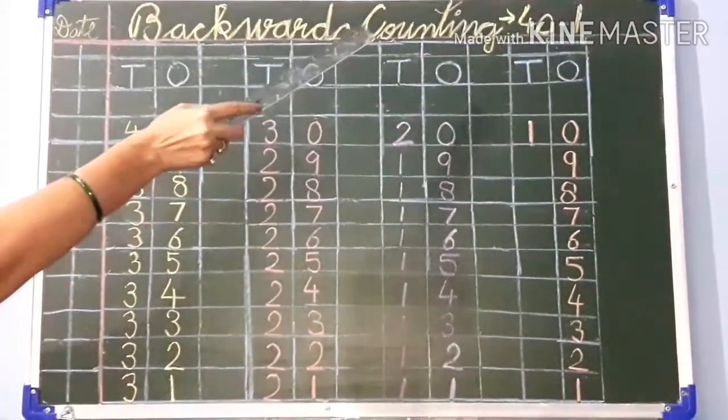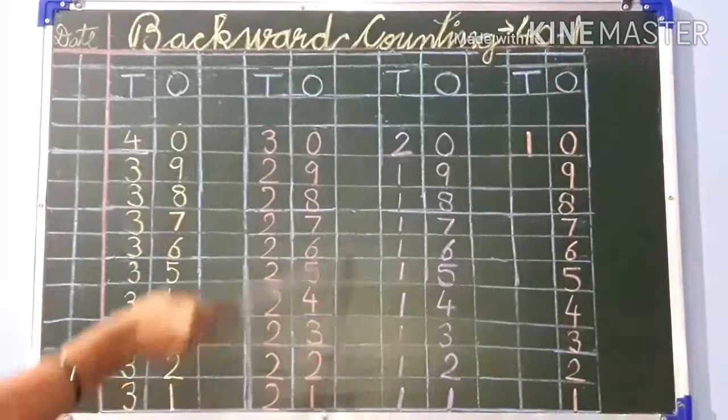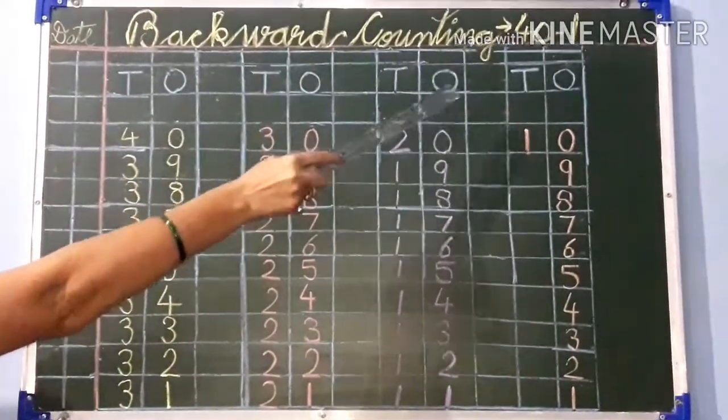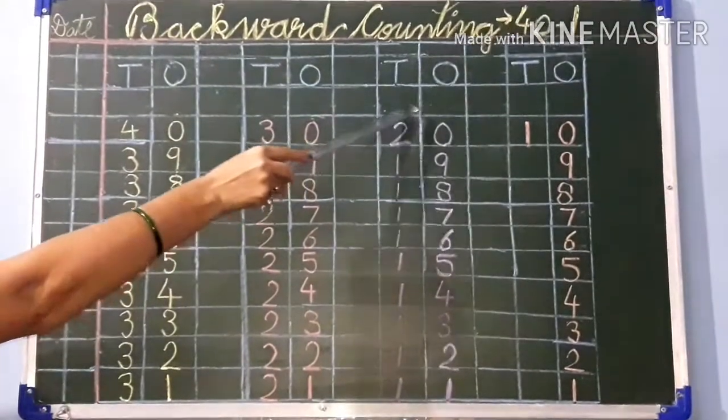Now come to the next column. You have to leave this column and then write T and O. Tens and ones. Then leave 1-1 block in this row.